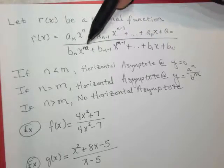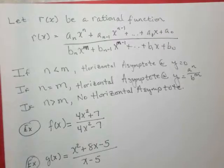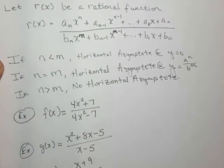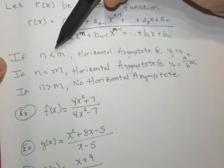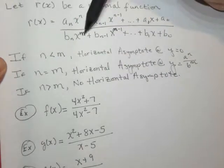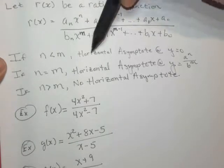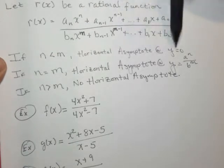So we're going to compare these two powers to come up with our horizontal asymptotes. So it says here, in the first case, if n is less than m, so if this is less than this one, the top exponent is smaller than the bottom exponent. We have a horizontal asymptote at y equals 0.